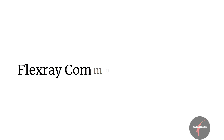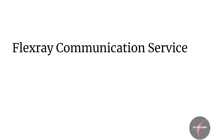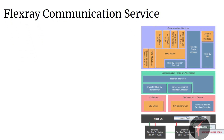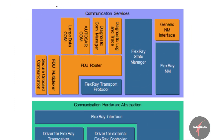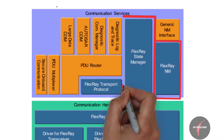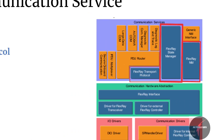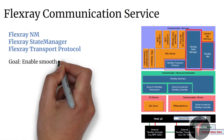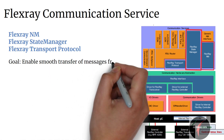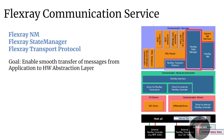Let's go deeper and see the specific modules in the FlexRay communication service. In comparison to the CAN communication stack seen in the last video, the FlexRay communication stack is similar to CAN with a few changes in basic modules such as FlexRay NM, FlexRay state manager, and FlexRay transport protocol. The goal of these modules remains the same as in CAN — to manage and synchronize the network of messages from application to hardware abstraction.